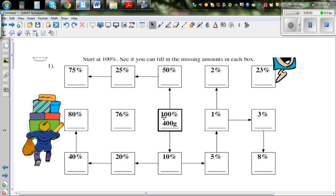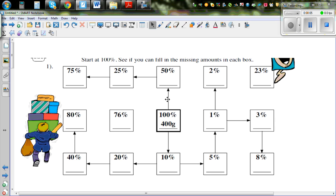Let's look at this puzzle. Start at 100%. See if you can fill the missing amount in each box. So this 100%, what we know is we are starting with 400 grams is given to be 100%. So using this information we need to fill all the other boxes. This is the core information that we have.